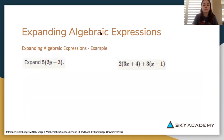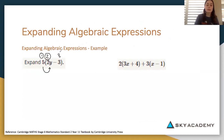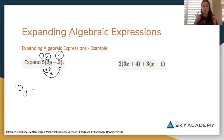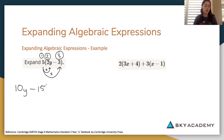Here we've been asked to expand five bracket two y minus three. We're going to do the first number times the second, then the first number times the third. Five times two y: we do the number part, five times two is ten, so we get ten y. Then it's minus — keep an eye on the symbol — five times negative three gives us negative fifteen. So our answer is ten y minus fifteen.